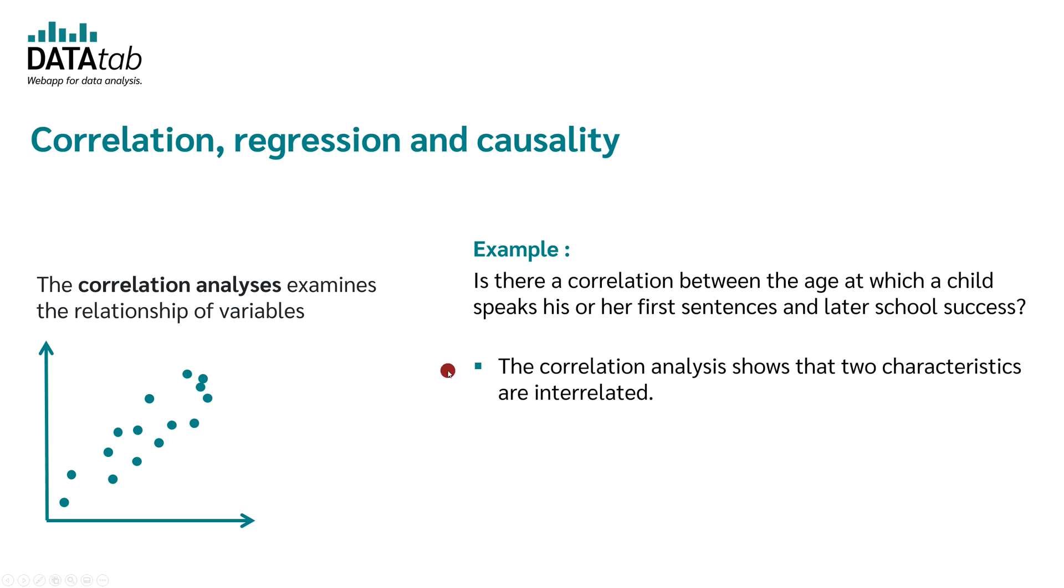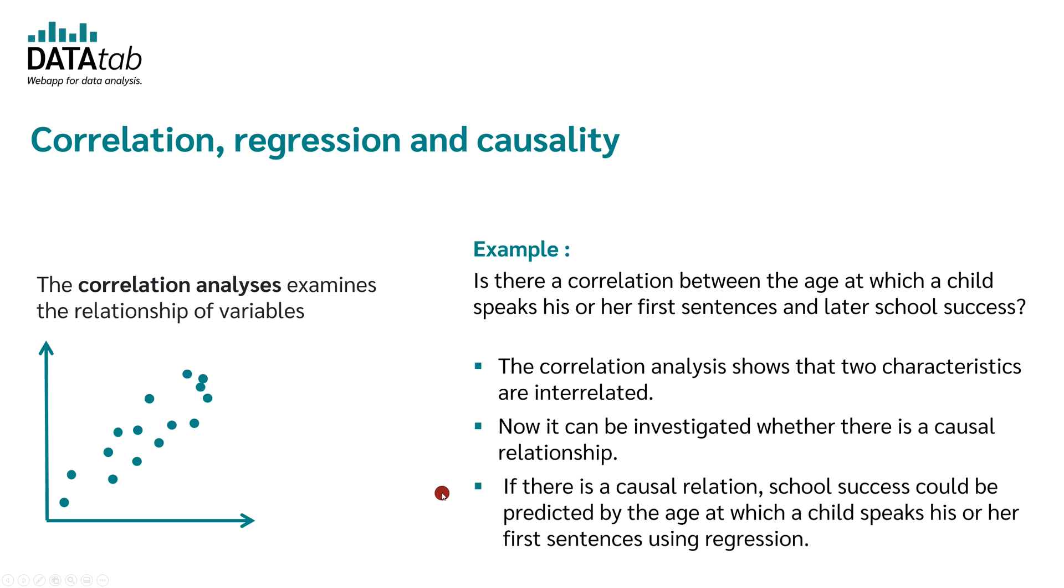If the correlation analysis shows that the two characteristics are correlated, we could now investigate whether there is a causal relationship. If there is a causal relationship, school success could be predicted by the age at which a child speaks his or her first sentences using a regression.